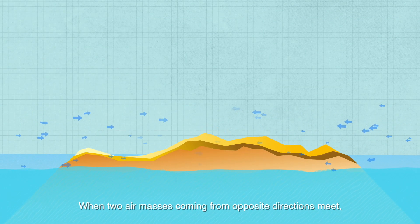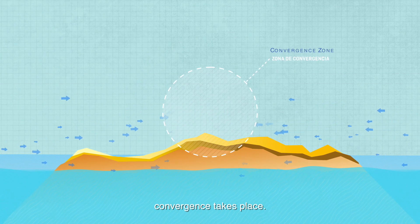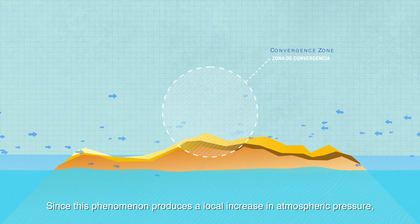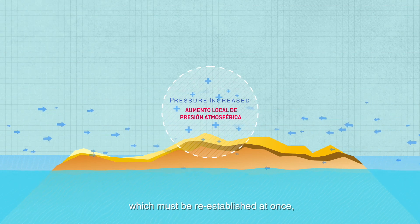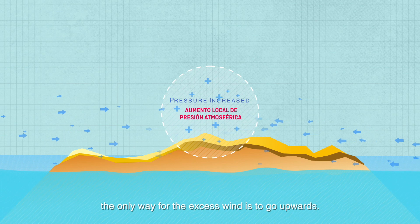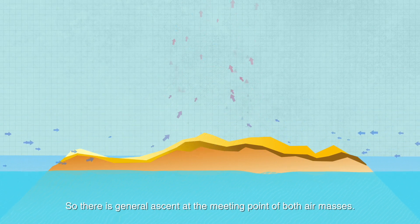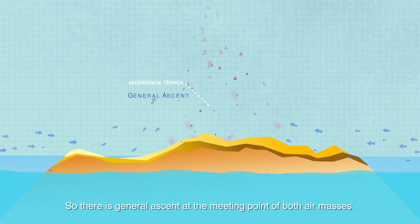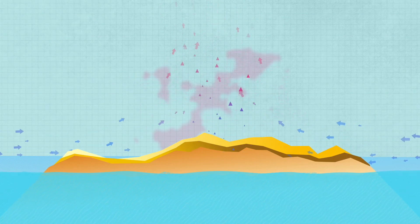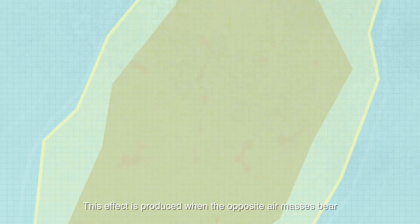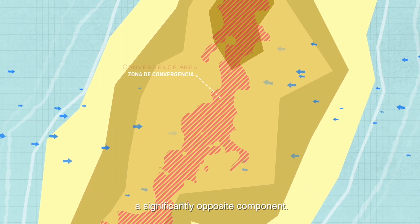When two air masses coming from opposite directions meet, convergence takes place. This phenomenon produces a local increase in atmospheric pressure which must be re-established at once, and the only way for the excess wind to go is upwards. So there is a general ascent at the meeting point of both air masses. This effect is produced when the opposite air masses bear significantly opposite wind directions.